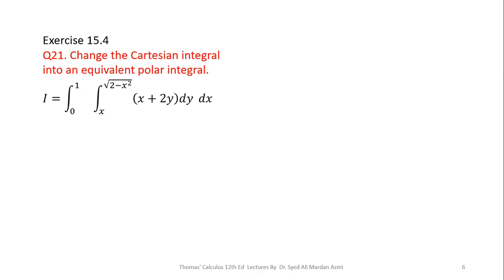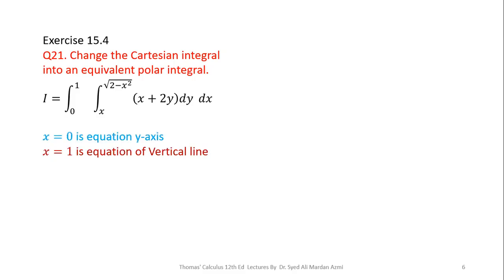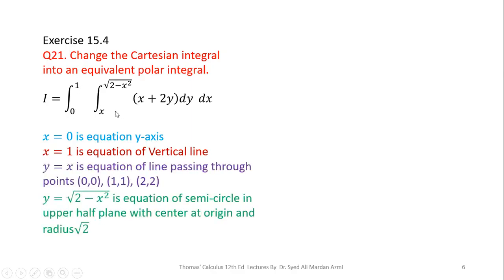Now, after knowing some basic things, we are able to solve this problem: Exercise 15.4, Question 21 — change the Cartesian integral into an equivalent polar integral. To convert this Cartesian integral into a polar integral, we need the boundaries obtained from the limiting values of the variables. Here the limits of x are 0 to 1 (the outer variable), and the limits of y are x to the square root of 2 minus x squared.